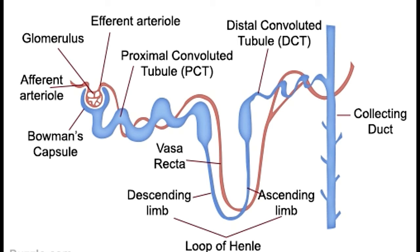The efferent arteriole is slightly narrower than the afferent arteriole. Combined with the arteriole blood pressure, this hydrostatic pressure causes smaller molecules such as water, glucose, and salts to be filtered out of the arteriole and into the space created by the Bowman's capsule. Special epithelial cells on the inner surface of the Bowman's capsule, called podocytes, prevent the extraction of larger molecules such as proteins. This primary filtering process forms what is known as the glomerular filtrate.